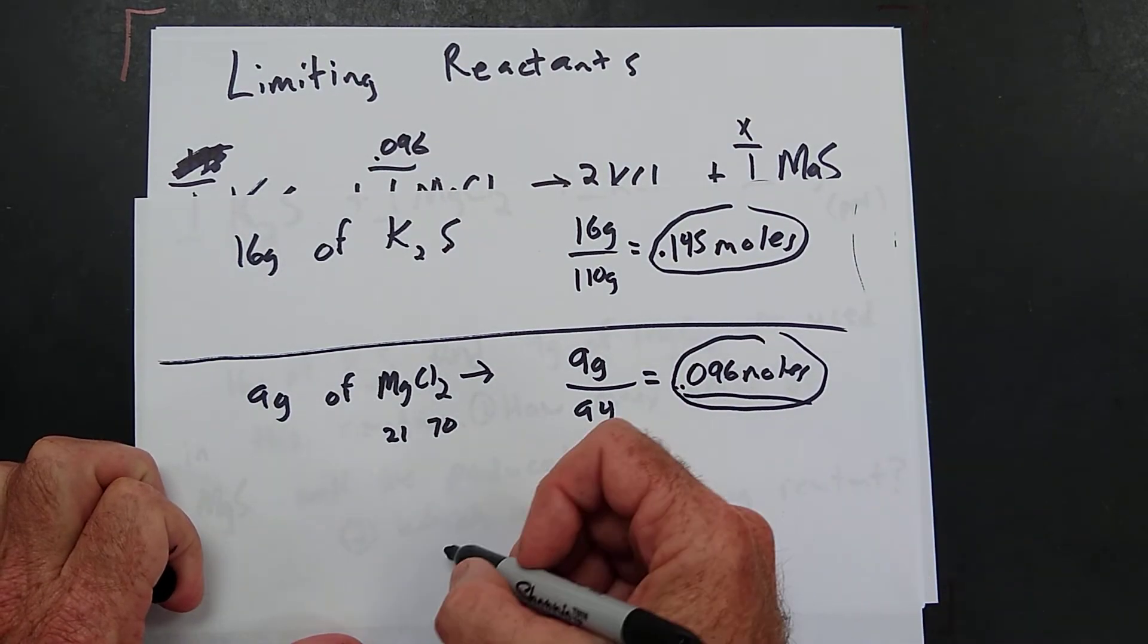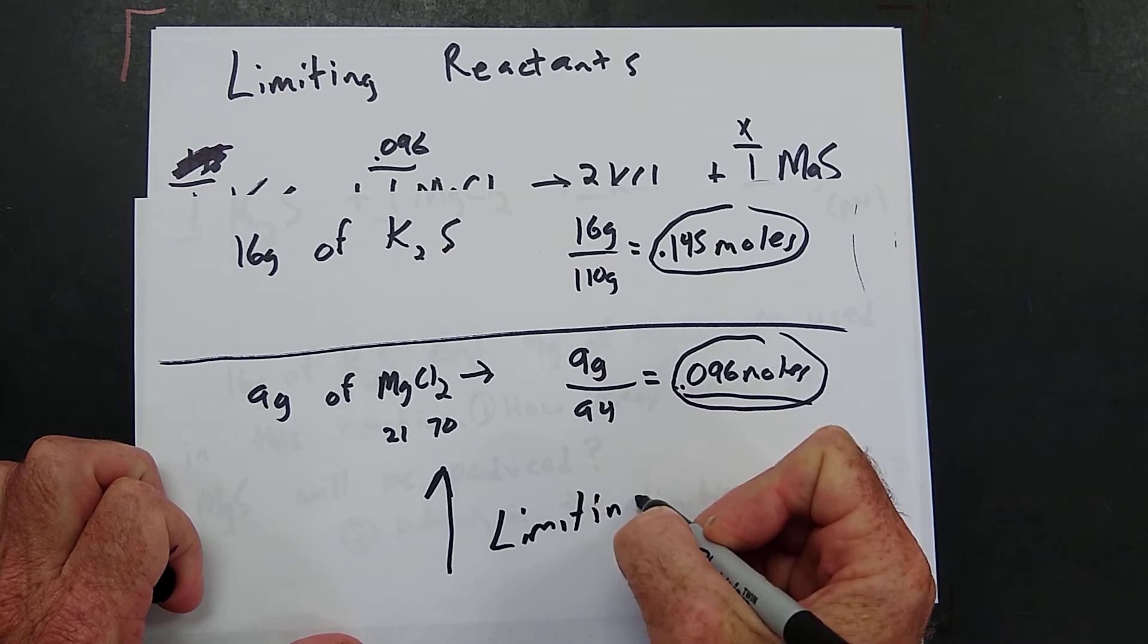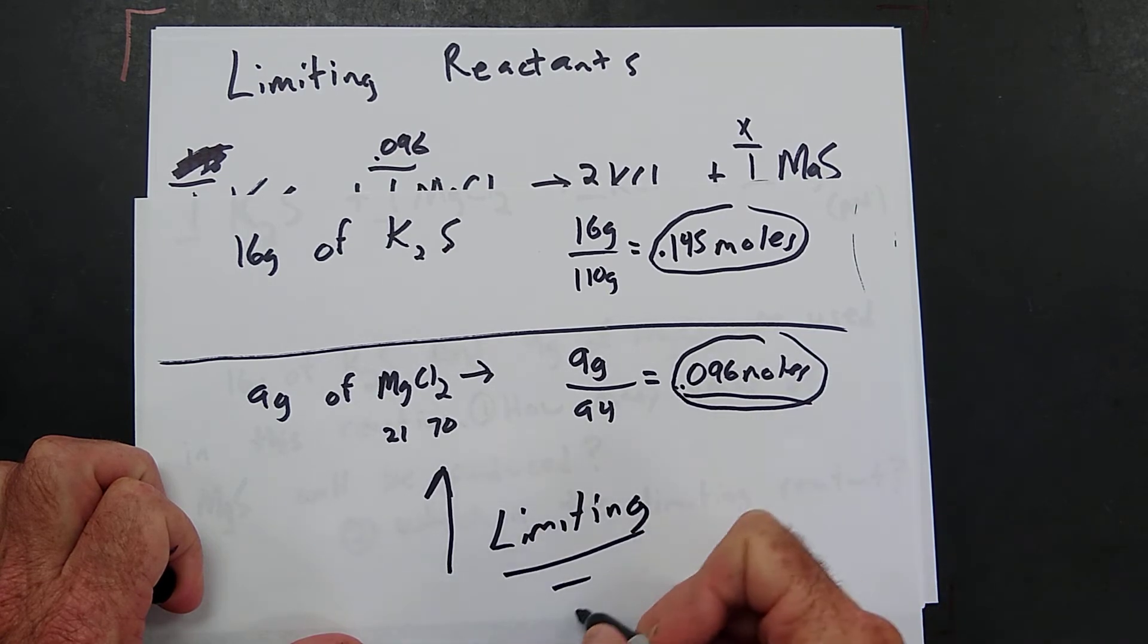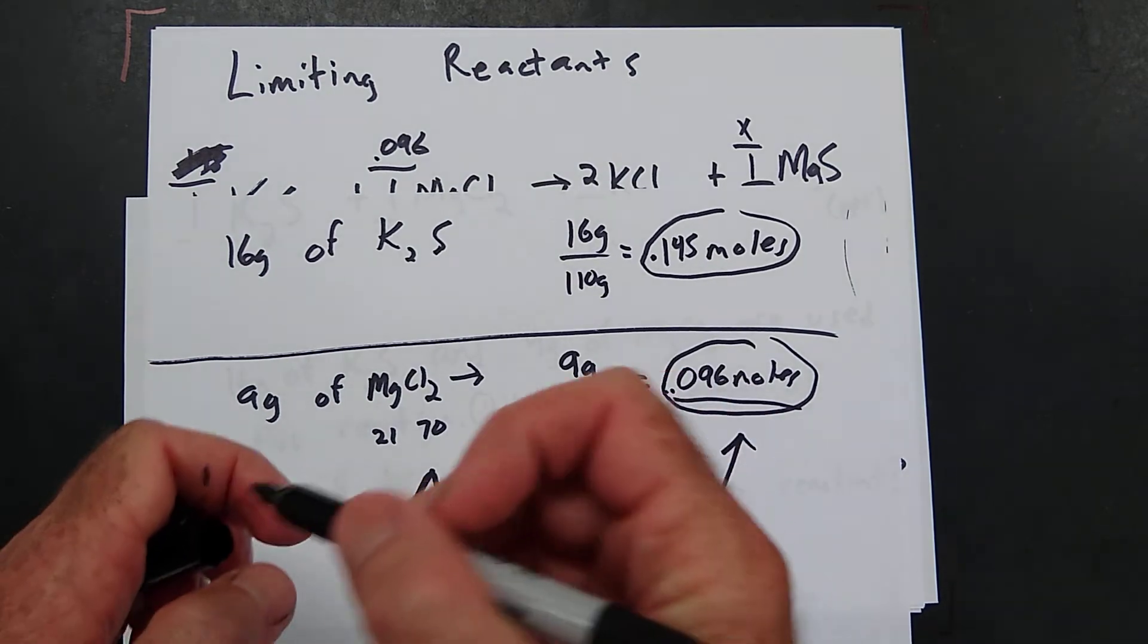So this one on the bottom is the limiting reactant. This is the one that's limiting us. It would make less. Does that make sense?